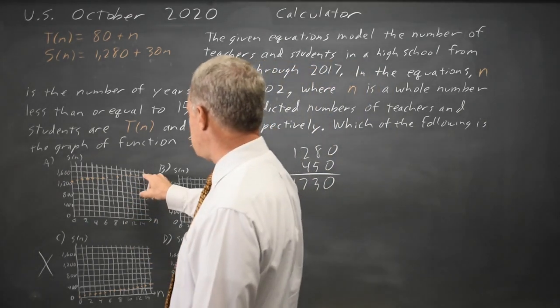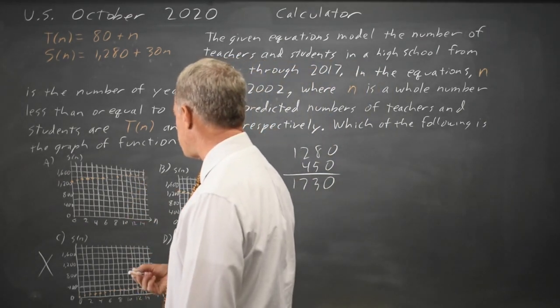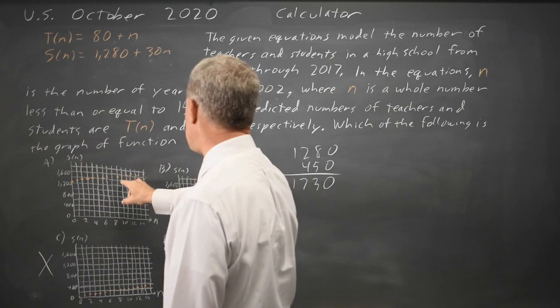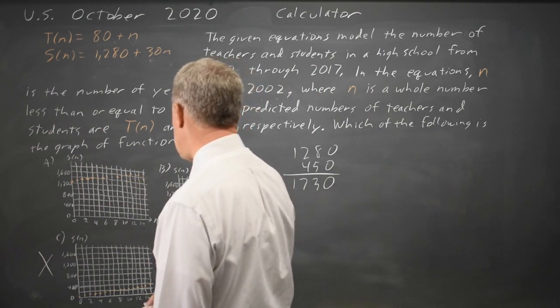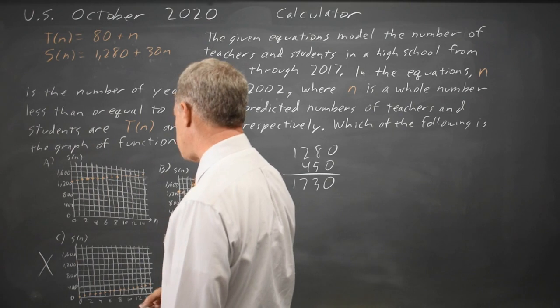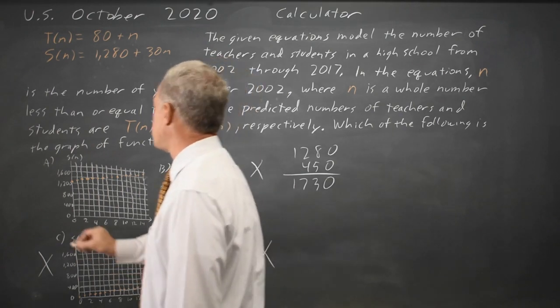And choice A, my graph is a little crooked because I'm not much of an artist, but it's certainly a positive slope and it is more than 1700. So choice A is reasonable.